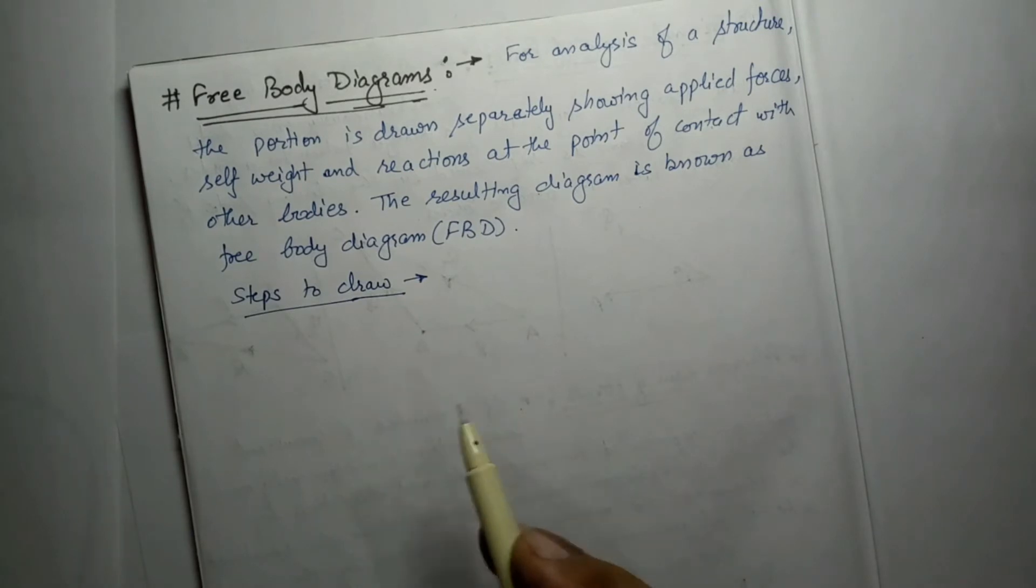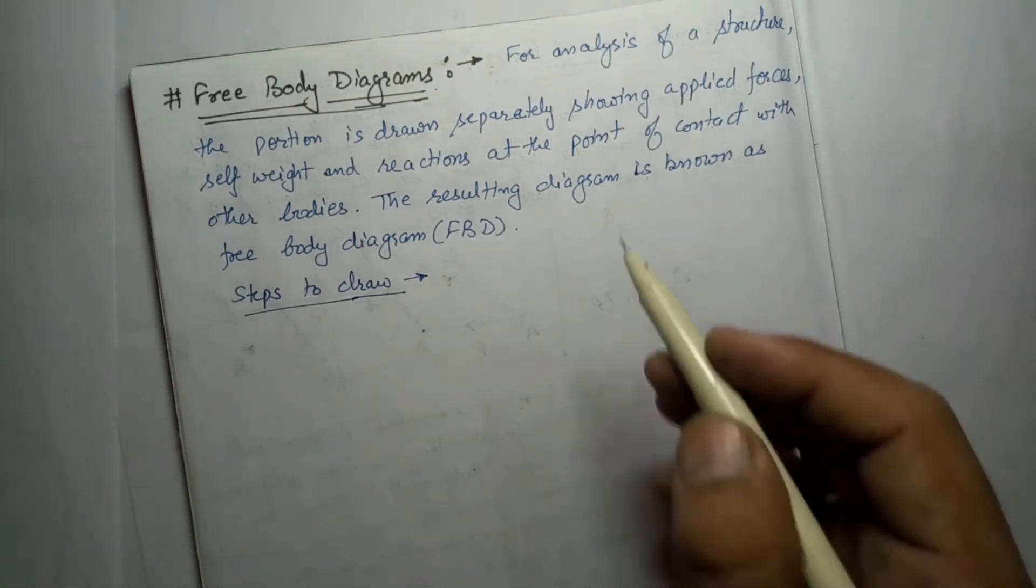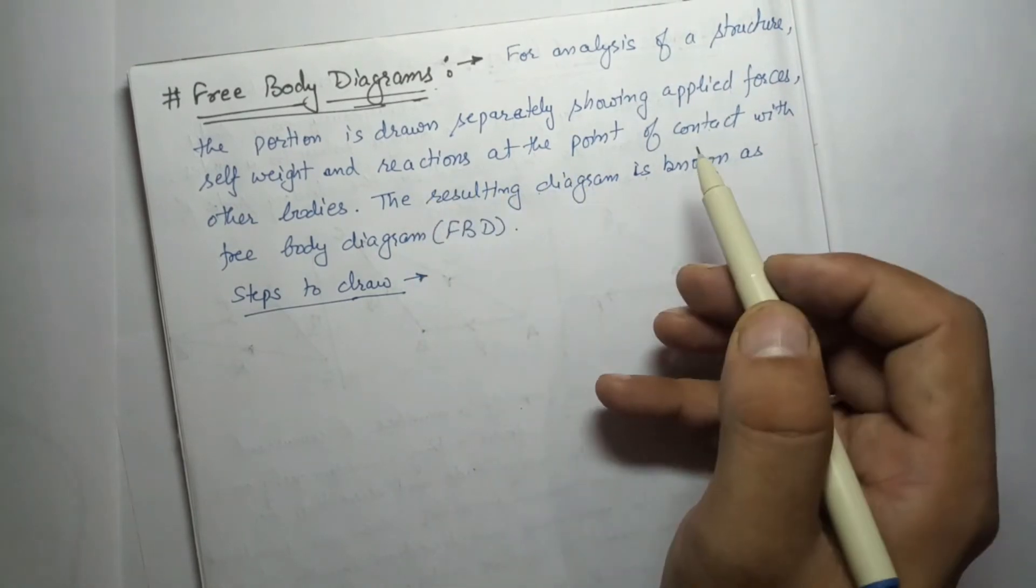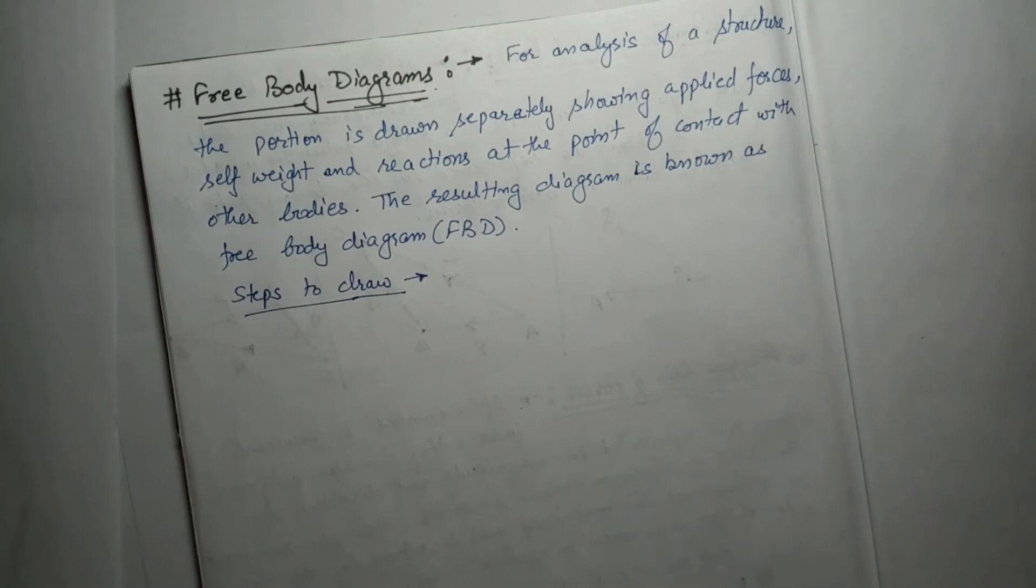We show all the forces which are acting on that. Theory says that for the analysis of a structure, the portion is drawn separately showing the applied forces, self weight, and reactions at the point of contact with other bodies. The resulting diagram is known as a free body diagram.